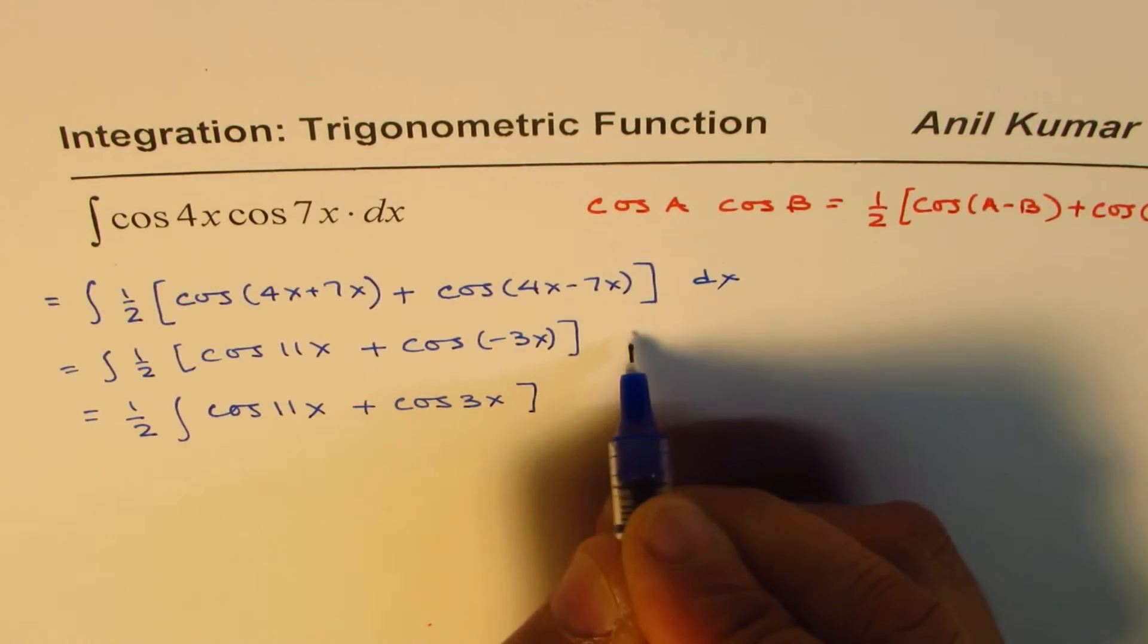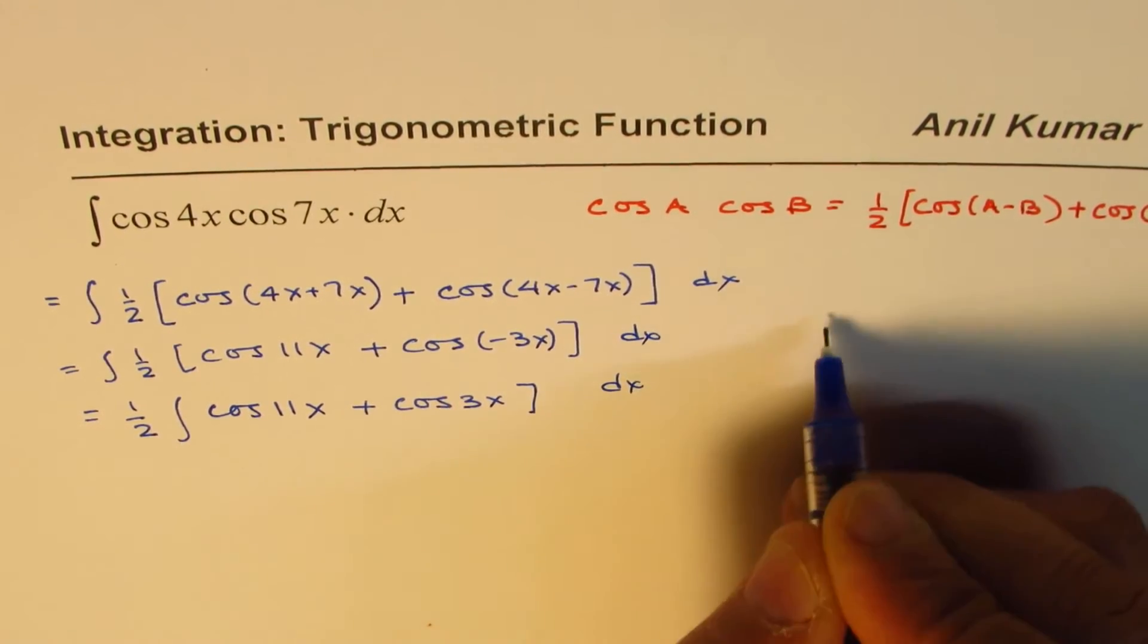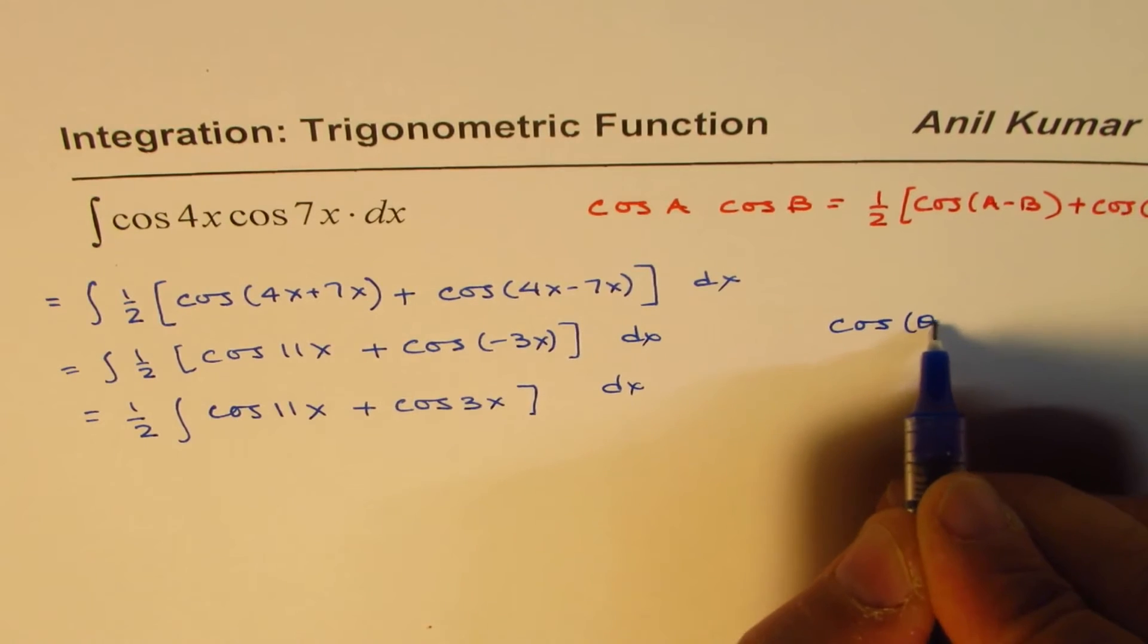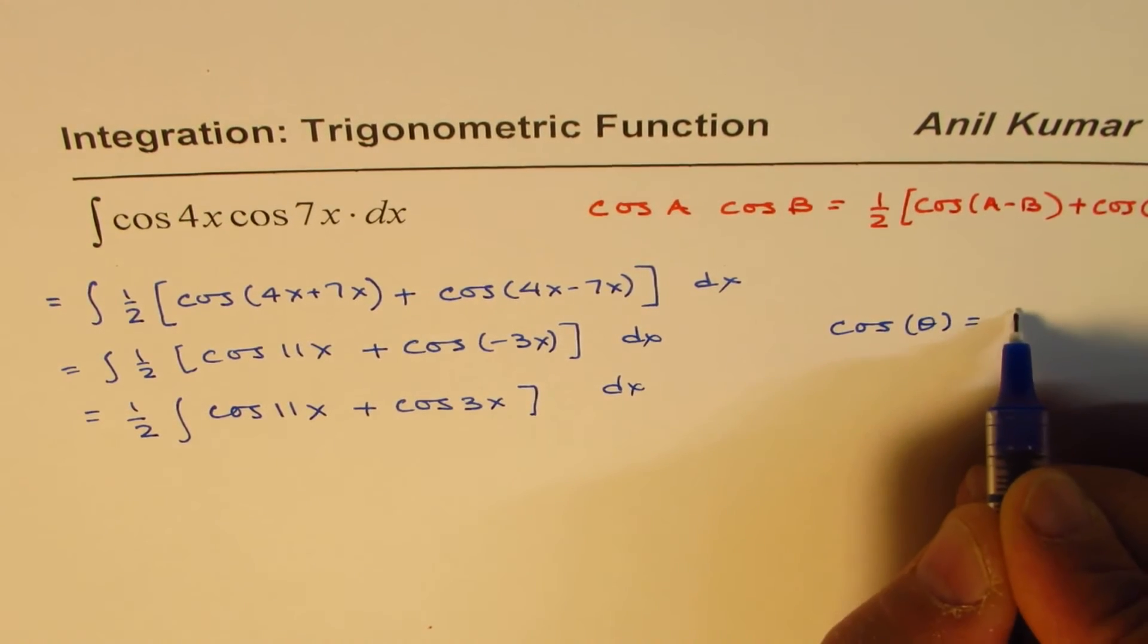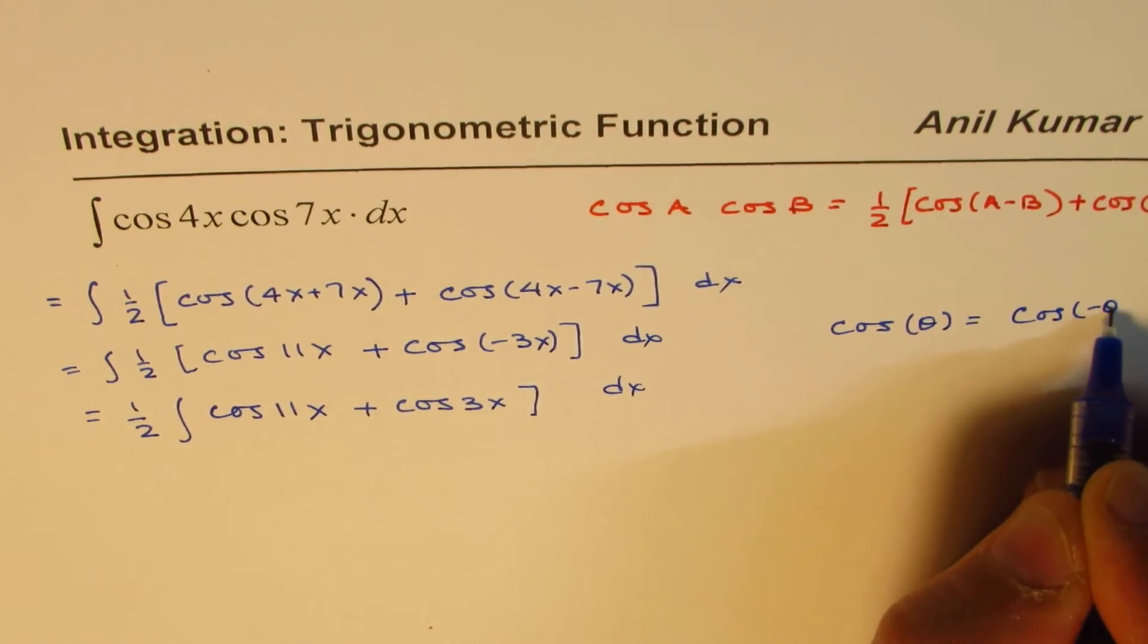Half can be taken out, so we can write this as half integral of [cos 11x + cos 3x] dx. Here we know cos(-theta) and cos(theta) are the same.